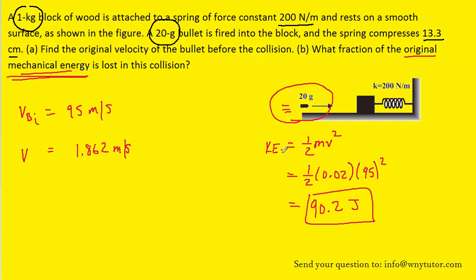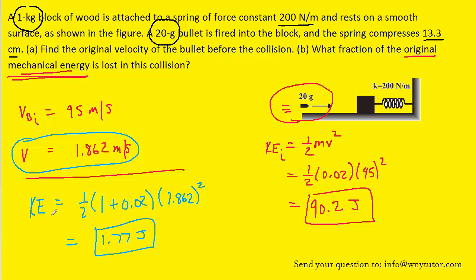Now, that's the initial energy, the initial mechanical energy. We can also find the final mechanical energy if we consider the final speed of the bullet and block together. Now at that point, the kinetic energy can be calculated in a similar way. It just turns out that with the mass, we have to add the mass of the block of wood plus the mass of the bullet. And then we can plug in their final speed that we had calculated earlier and square it. And that equals 1.77 joules. So that was the final kinetic energy.